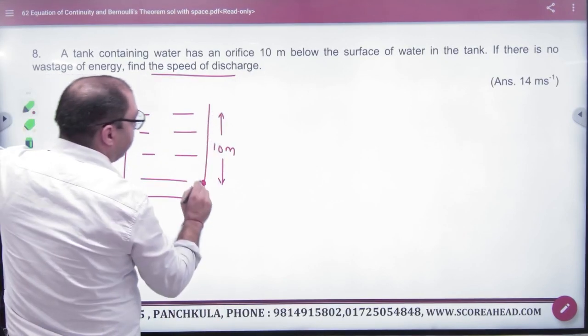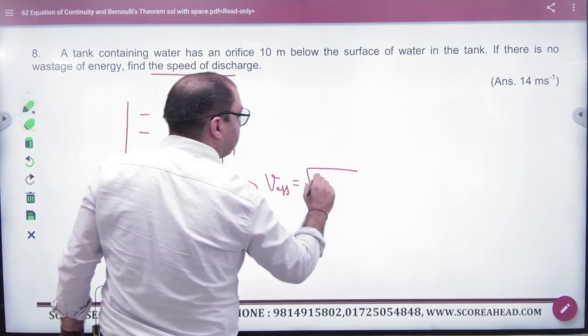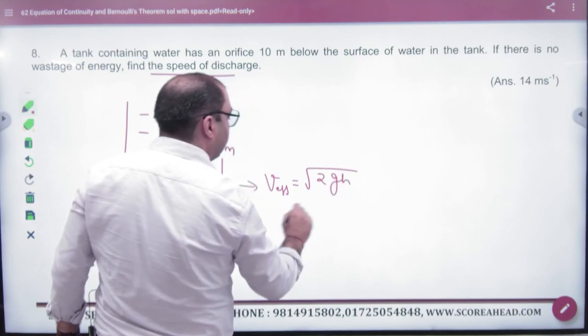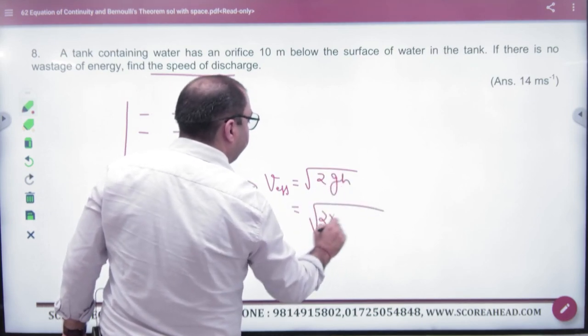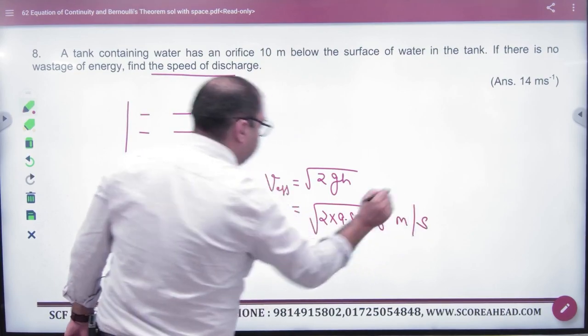What do we want to find? Find speed of discharge. What are you asking? Velocity of efflux: 2 into under root of GH. Under root of 2 into 9.8 into 10 meter per second. Answer.